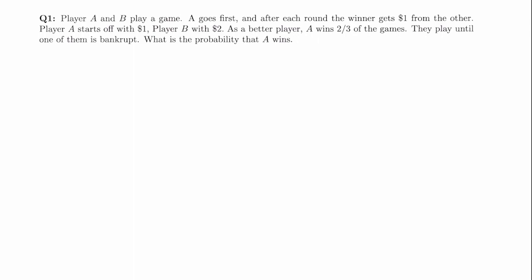So in this problem we have two players A and B that play a game. A goes first and the winner of each round gets one dollar from the other. A is better at this game so A wins two thirds of the games. A starts off with one dollar, B with two dollars, and they play until one of them is bankrupt. We're asked to find the probability that A wins.